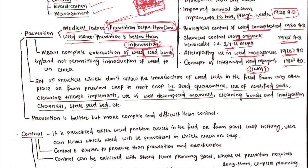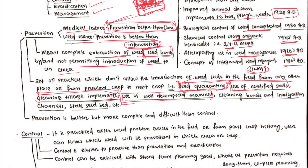How can we exhaust weeds? By not permitting the introduction of new weeds in that area. You can do that by using clean seeds — certified seeds that are devoid of different weed seeds. Then by following seed quarantine — you should not permit different new weed seeds into your country or locality through seed quarantine laws. Also, cleaning the tillage implements is important: if tillage implements from a heavily infested field come to your field for cultivation, they will disseminate weed seeds, so you must clean those implements.